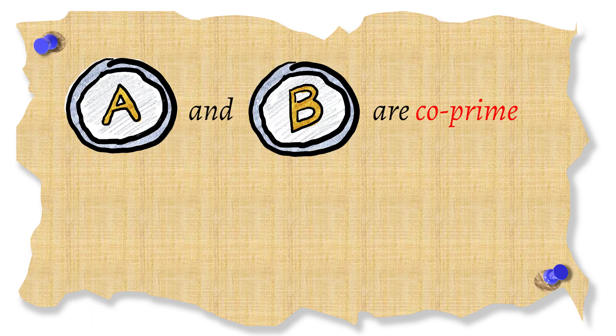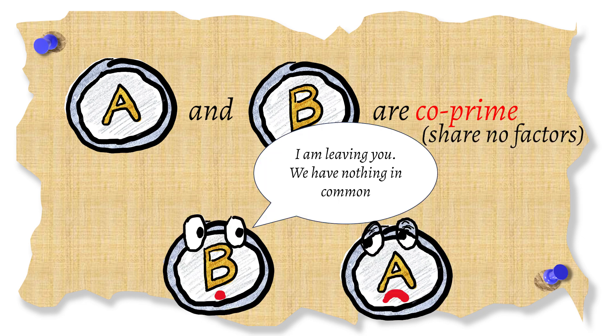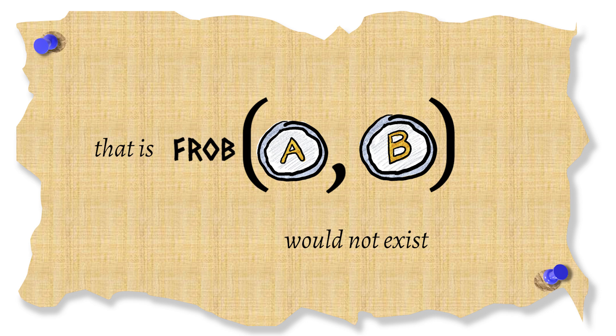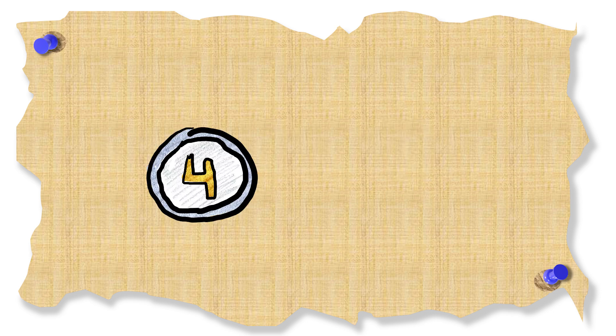Throughout this video we will assume that A and B are co-prime, that is they share no factors. If they did you could not make infinitely many numbers using them. Think about what happens when you have a coin of 4 and a coin of 6.